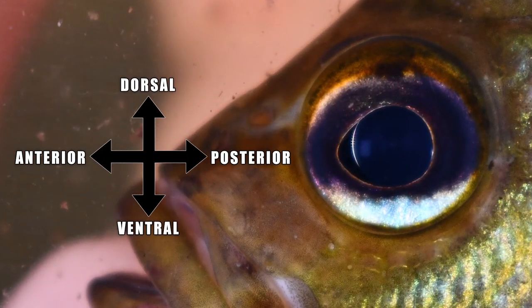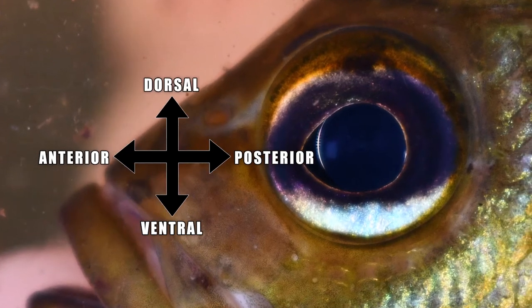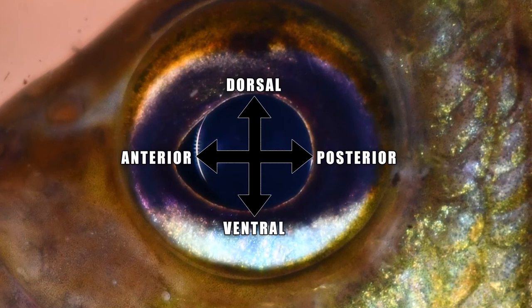Looking at this eye of a spotted sunfish, if I were to describe the blue color on the bottom of the eye, I would likely say that there is a crescent bowl of iridescent light blue ventrally seated in the eye.